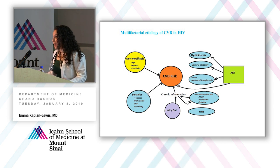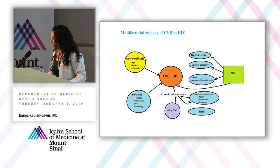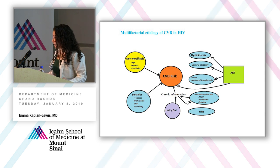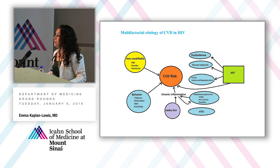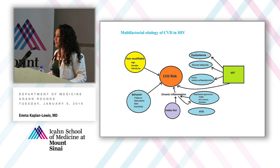Now talking about some of the etiology of cardiovascular disease. There are non-modifiable risk factors, and modifiable risk factors: behavioral factors including tobacco use and stimulant use; metabolic syndrome — dyslipidemia, visceral adiposity, insulin resistance; endothelial dysfunction, some from the virus itself and some from older HIV treatments; chronic inflammation; and decreased intestinal gut barrier with increased microbial translocation. All of this comes together in a melting pot of cardiovascular risk.